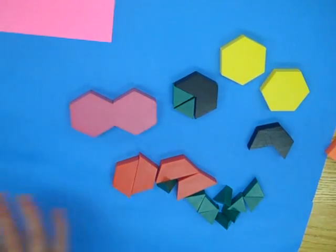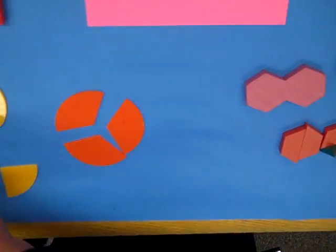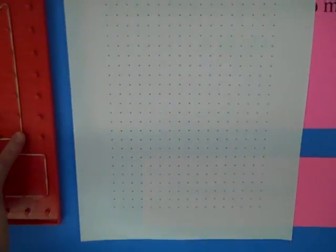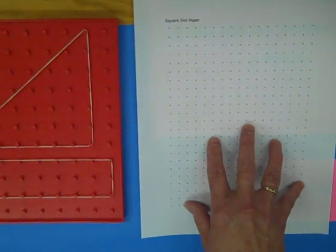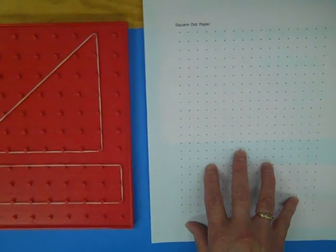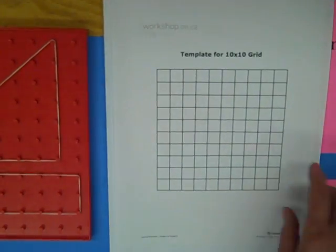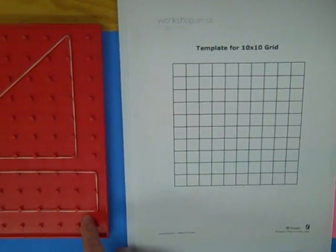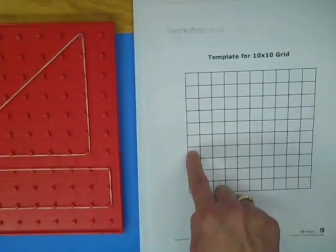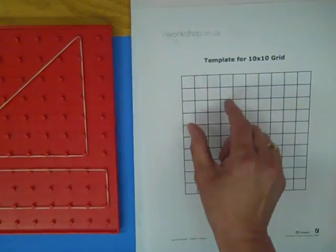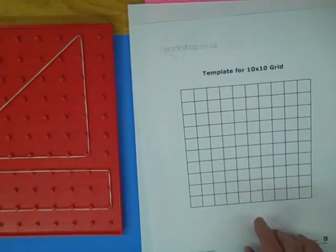So, these are all area. Now, we want to move the student from the geoboard onto paper. So, I could use dot paper. I can use a grid. These have ten squares by ten squares. So, it's like a blank hundred chart.